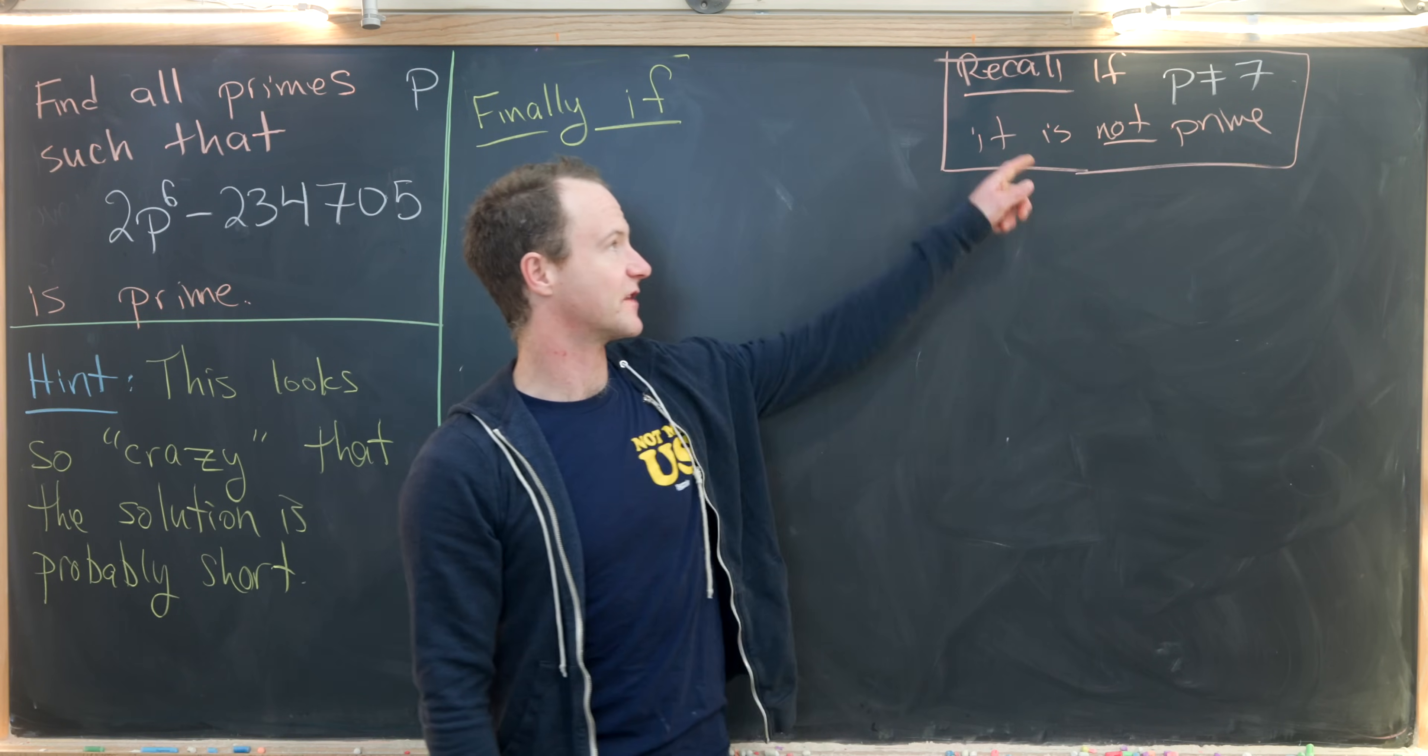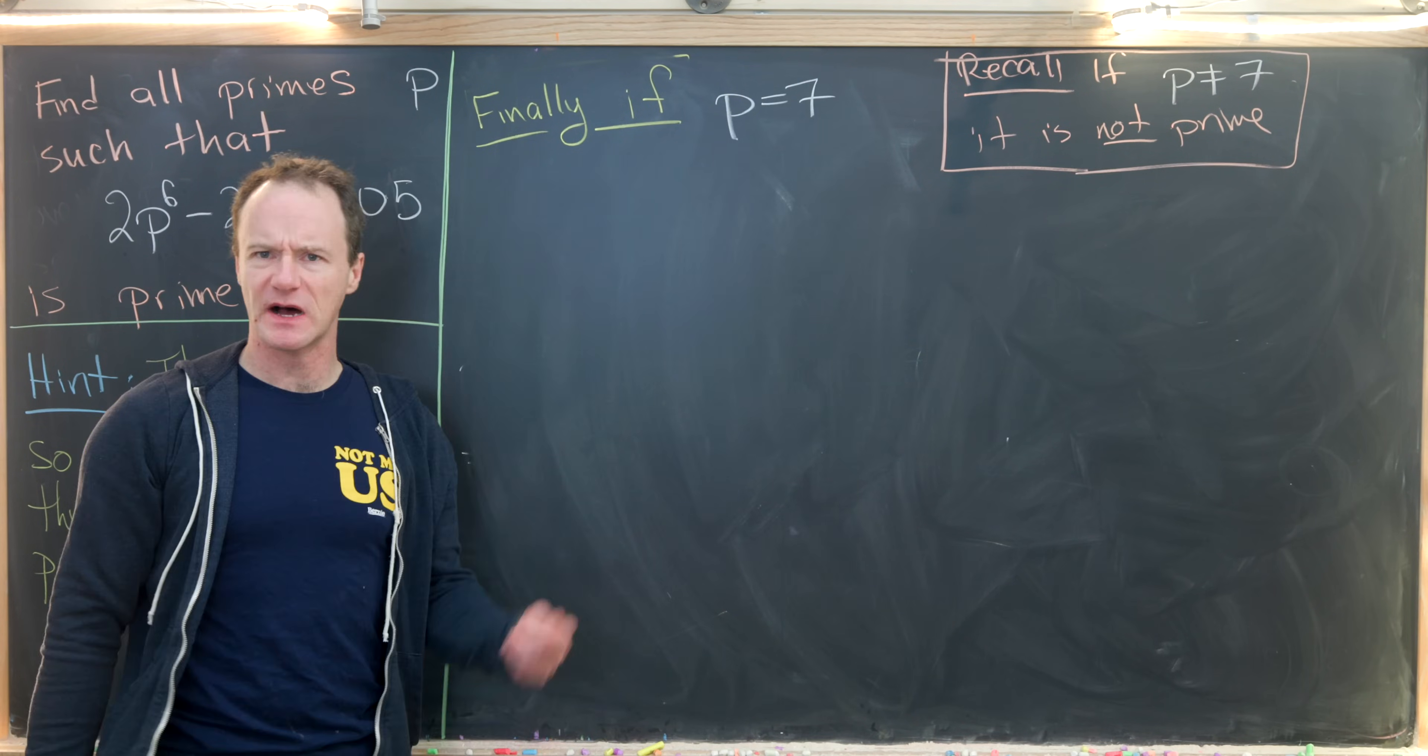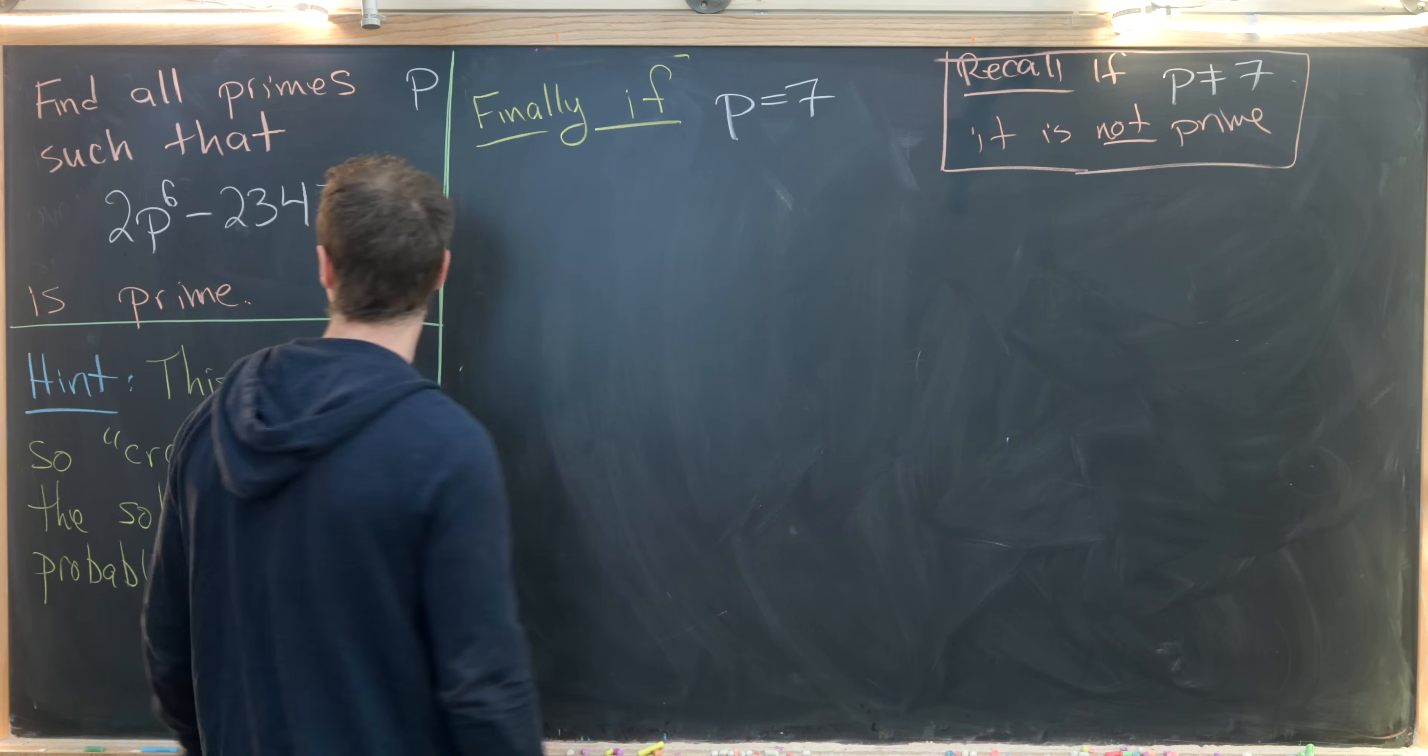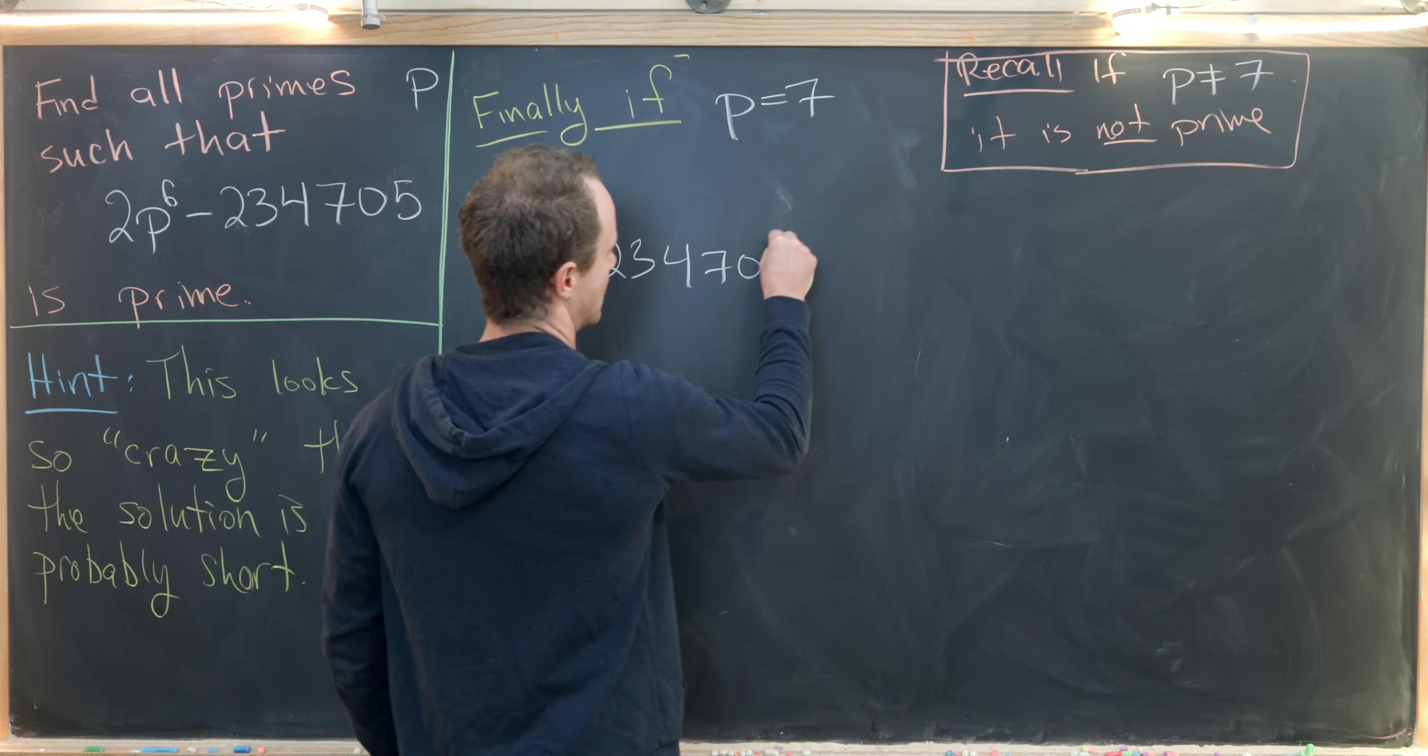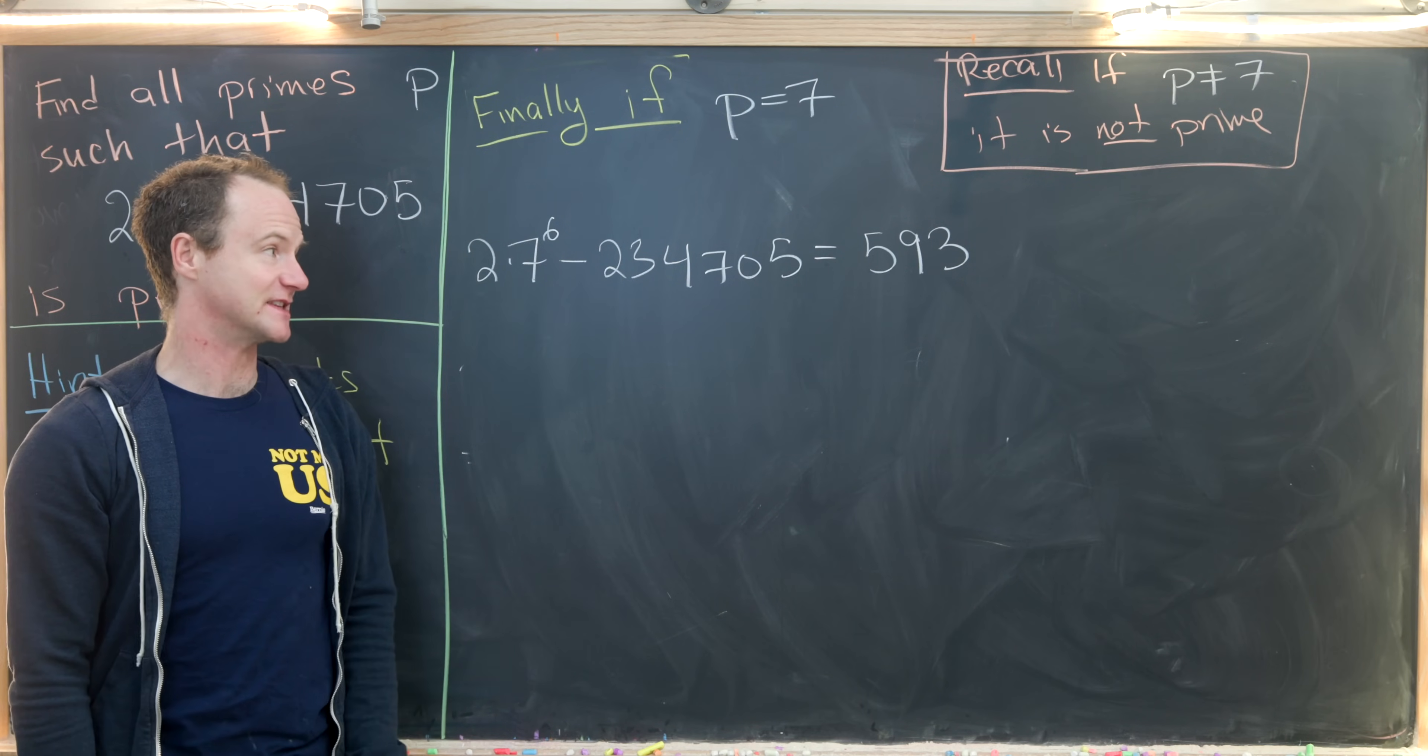So let's do that. We just got done showing that if p is not equal to 7, this object is not prime. Now we have to check what happens if p is equal to 7. So we've got two possibilities. This could be prime and then we've got our solution, or maybe this is also not prime and there is, in fact, no solution. Well, let's check. So if we take 2 times 7 to the 6 minus 234,705, I'll spare you the long calculation. But what you end up with is the number 593. Then we have to check if that is prime or not.